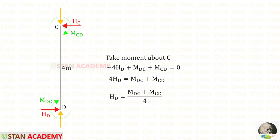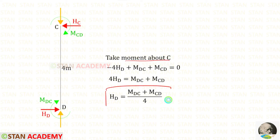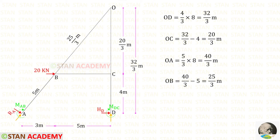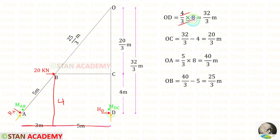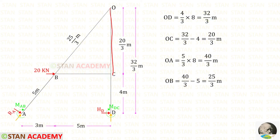In a similar way, we take the vertical member CD and find the reaction HD. We assume moments M-DC and M-CD are acting in the clockwise direction. Taking moments about C, we get HD equal to (M-DC plus M-CD) upon 4. Now we extend the lines AB and DC up to the point where both of them meet. Let us name the meeting point as O. We need to find the height OD. For 3 meter the height is 4, so for 8 meter we multiply with 8, giving a height of 32 upon 3 meter. To find the height OB, we subtract 4 from 32 upon 3, giving 20 upon 3 meter.